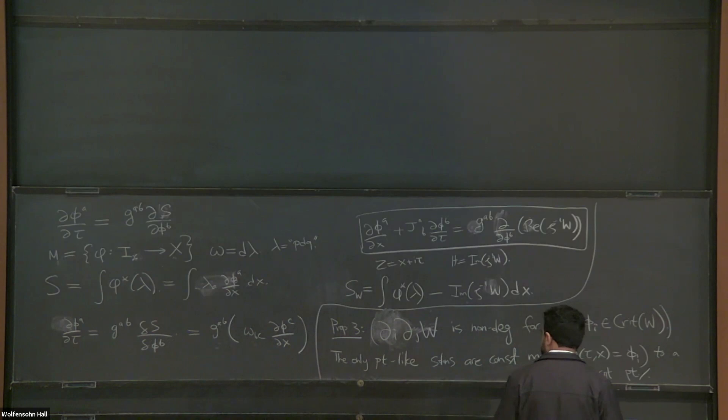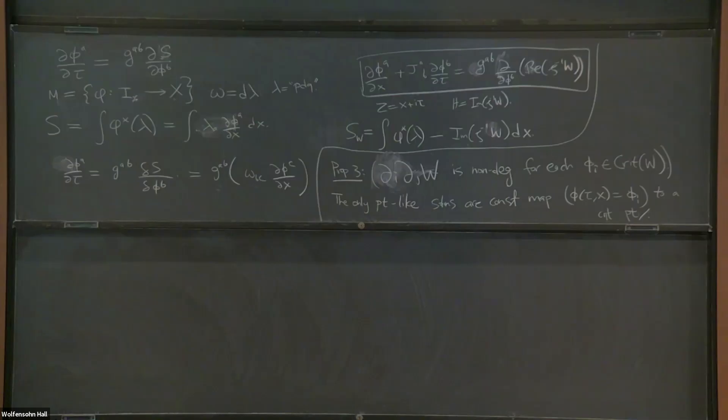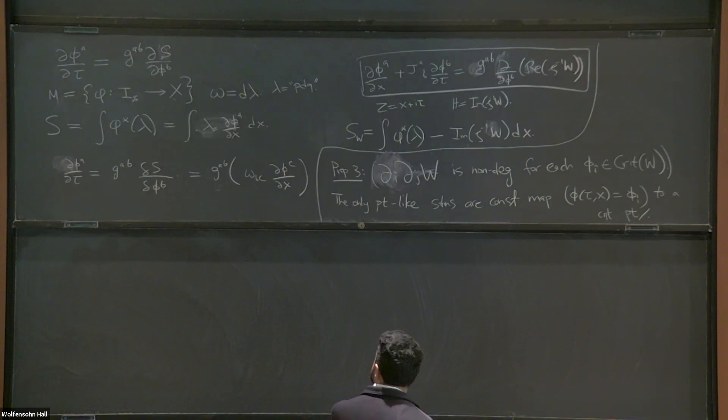Question from audience: why don't you just absorb zeta into W? Answer: Yes, that's a great point — you could. There's a symmetry: you can just rotate zeta and get rid of it in that way. But it'll be useful to keep it around.